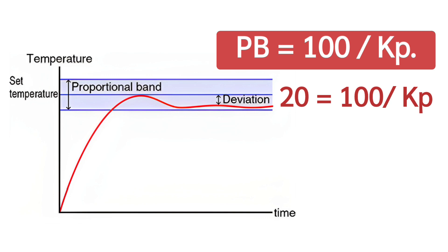From this, you will get the value of Kp. Kp is equals to 100 divided by 20, meaning Kp is equals to 5.